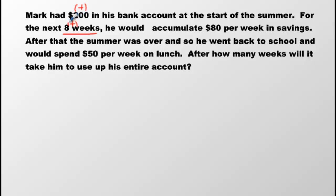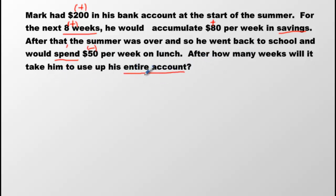So we can put that in brackets — positive. He would accumulate $80 per week in savings. If you're saving your money, you're getting richer, so that is a positive amount. After that, the summer was over and he went back to school and would spend money. When you're spending money, you're losing money — so that is negative per week on lunch. After how many weeks will it take him to use up his entire account? We have to figure out what his entire account is.